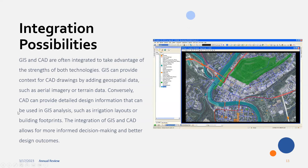GIS and CAD are often integrated to take advantage of the strengths of both technologies. GIS can provide context for CAD drawings by adding geospatial data such as aerial imagery or terrain data, while CAD provides detailed design information of the system you're trying to build, which can then be put into GIS for analysis. Irrigation layouts or building footprints could be integrated into a GIS project and overlaid. The integration of GIS and CAD allows for more informed decision making and better design outcomes.